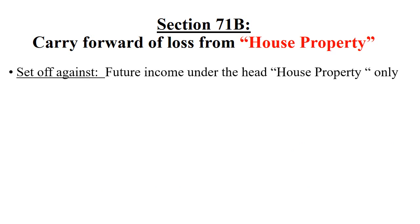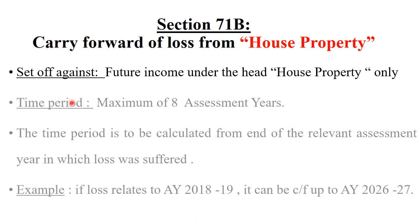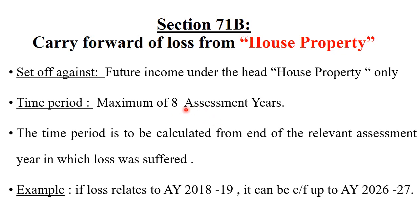Section 71B deals with carry forward of house property losses. The loss can be carried forward for a maximum of 8 subsequent assessment years and can only be adjusted against future income from house property.